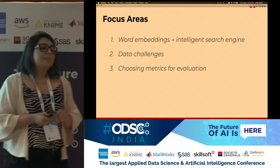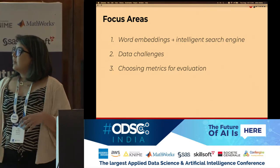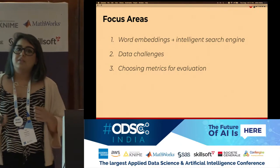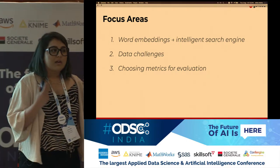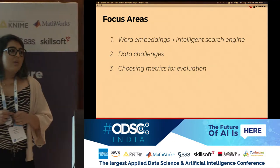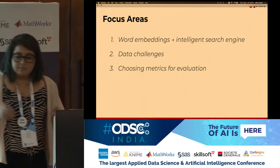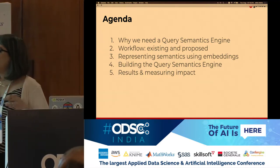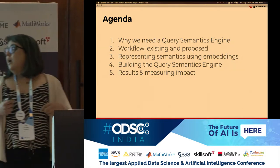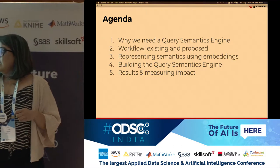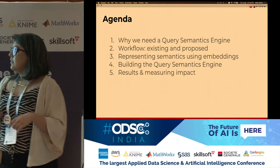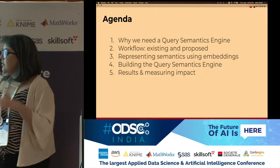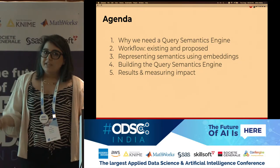Let me start with the focus areas of this talk. I'll be covering how we took advantage of word embeddings to make our search engine more intelligent, some of the data challenges we faced — including how to find the right data and how we built our training and test datasets — and how we chose the right metrics for evaluating our models. The agenda is: why we need a query semantics engine, what the existing and proposed workflows look like, how we represent semantics using embeddings, how we built the query semantics engine components, and finally the results and impact.